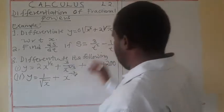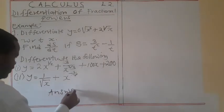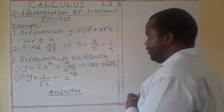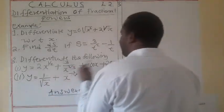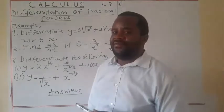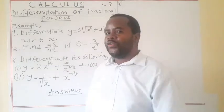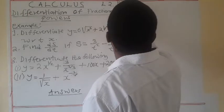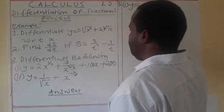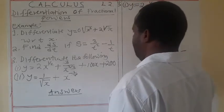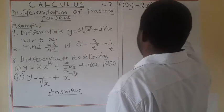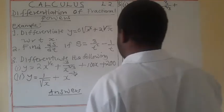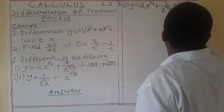So we start with the answers. Allow me to start with question 3. Now question 3 reads: differentiate the following. So by differentiating, we want you to find the derivative. We want you to find the differential coefficient. We want you to find the gradient of a function. So what is the first one? We have y is equal to 2x to the power half, plus 3 divided by x to the power 2 over 3, plus 100x plus 200.